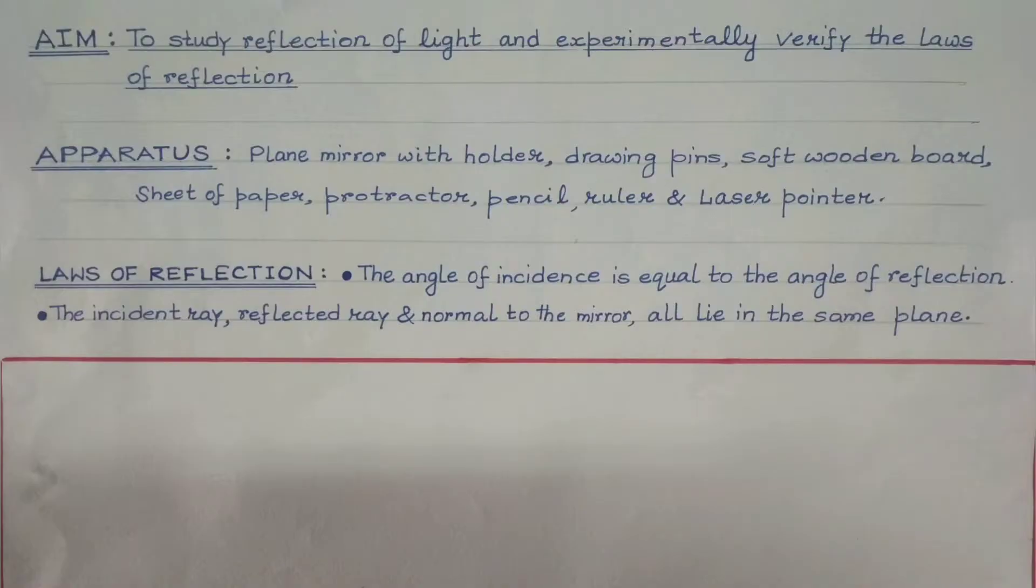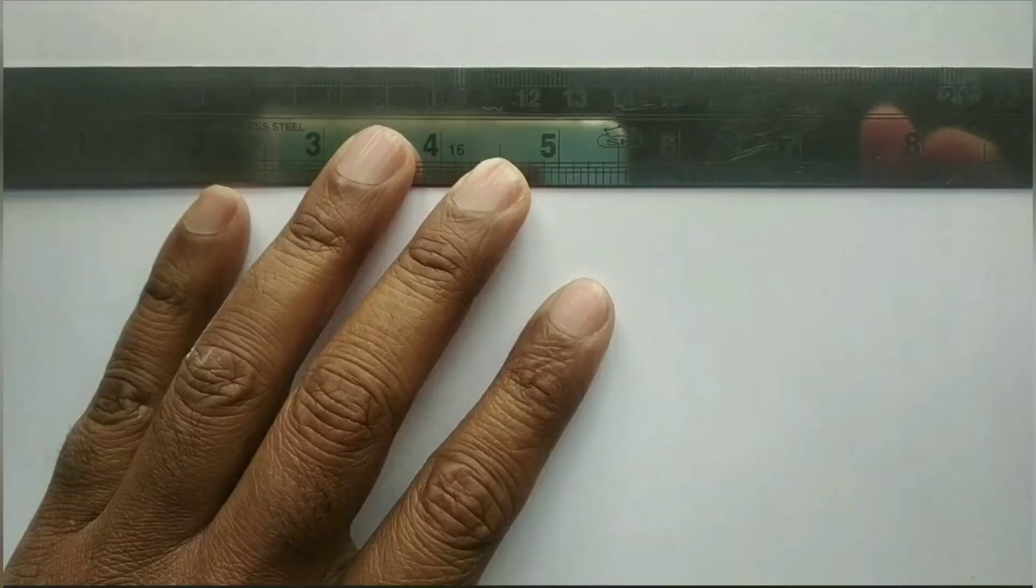So students, the aim of this particular activity is to study about the reflection of light and we are going to experimentally verify the laws of reflection. In the process, we are going to prove that angle of incidence is equal to angle of reflection and the incident ray, reflected ray and the normal will all lie on the same plane.